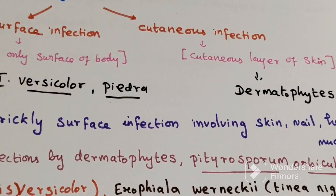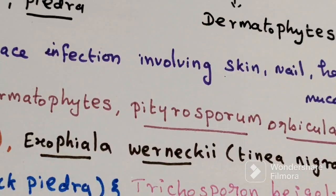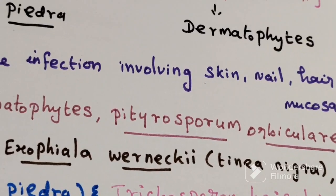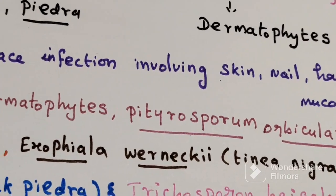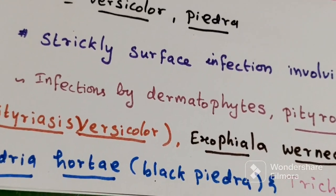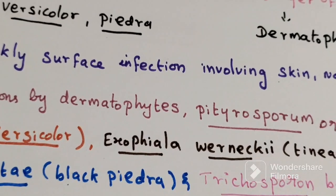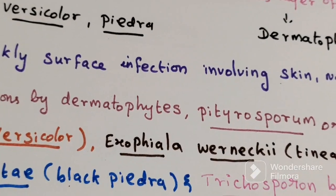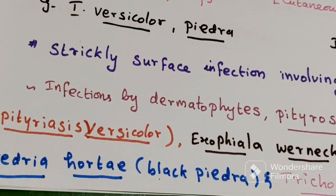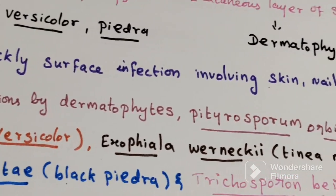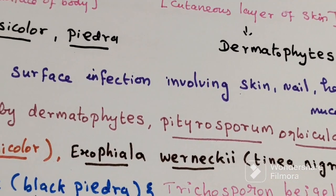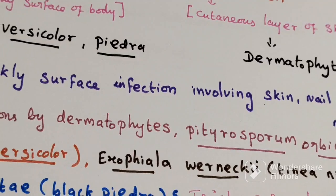They have specific names: Pityrosporum orbiculare, then Hortaea werneckii, Exophiala, then Piedraia hortae, then Trichosporon beigelii. These are the different organism names associated with superficial mycosis.